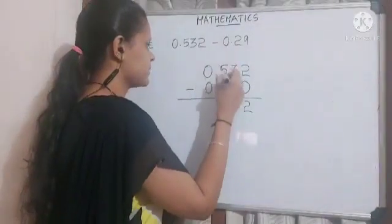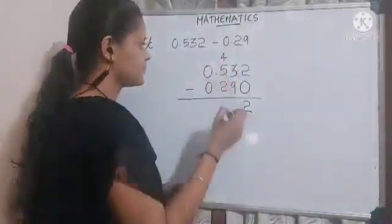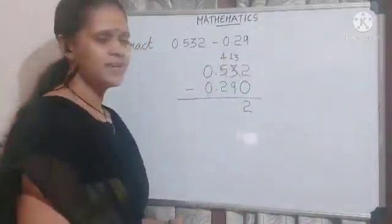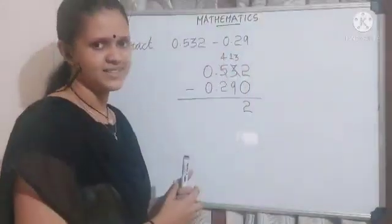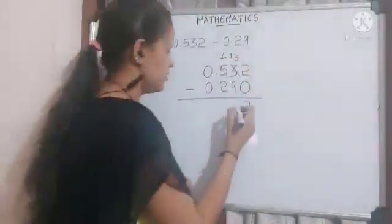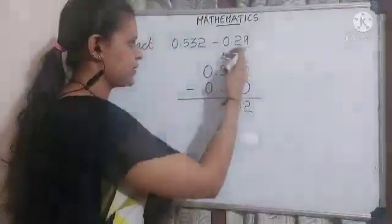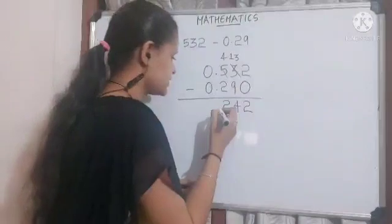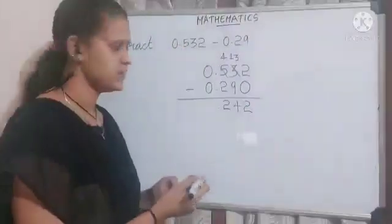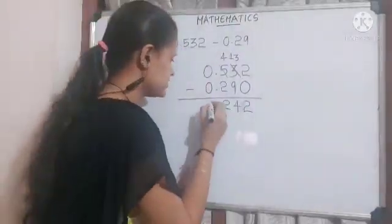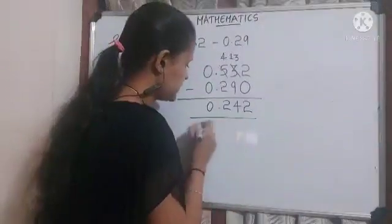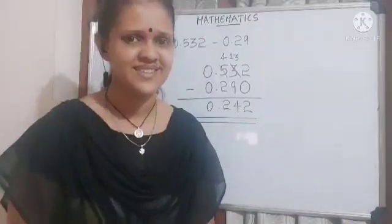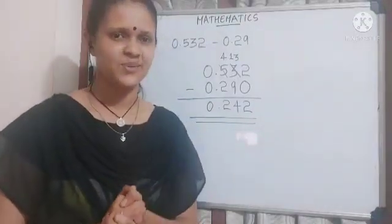Now 5 becomes 4 and 3 becomes 13. Now we can subtract 9 from 13. 13 minus 9 is 4. 4 minus 2 is 2. Then put the decimal point. 0 minus 0 is 0. The answer is 0.242. That's all for today's class. Thank you and have a great day.